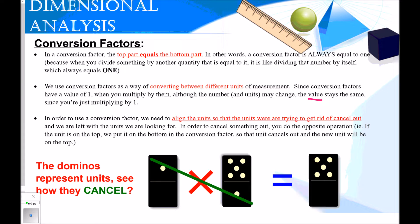In order to use a conversion factor, we need to align the units so that the units we're trying to get rid of cancel out, and we're left with the units we are looking for. In order to cancel something out, you do the opposite operation. Starting with a domino that has a one on top, in the next domino the one is on the bottom so those can cancel. What I'm left with is the five on top — my final answer. They have to be opposites: one on top and one on the bottom. That is why they cancel.